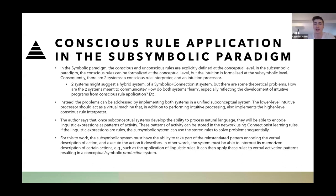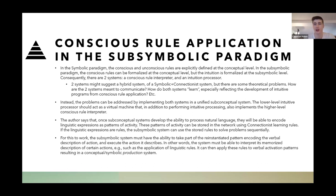In the symbolic paradigm, conscious and unconscious rules are usually explicitly defined at the conceptual level. In the sub-symbolic paradigm, conscious rules can be formalized at the conceptual level, but intuition is formalized at the sub-symbolic level. There are two processors: a conscious rule interpreter and an intuition processor. Given two systems, you might think about a hybrid system — why not take a symbolic system and a connectionist system and make them work together? But there are problems: how should the systems communicate, and how did both systems learn, especially reflecting the development of intuitive programs from conscious rule application?